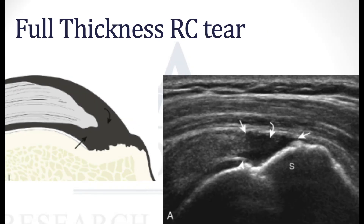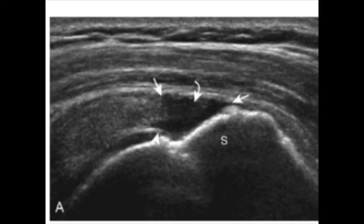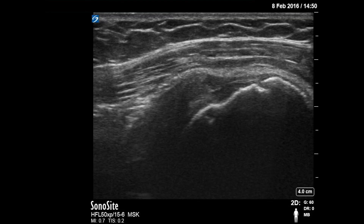What about a higher grade, more problematic full-thickness rotator cuff tear? We could clearly see here how the tendon is detached and slightly retracted. Let's look at another image of that — clearly we can see the disruption of normal architecture of the fibrillar pattern of the tendon.